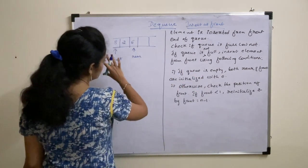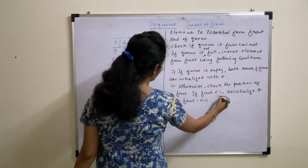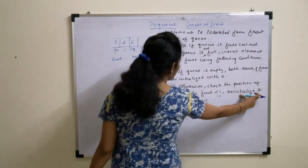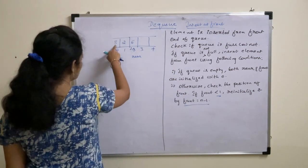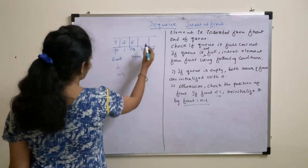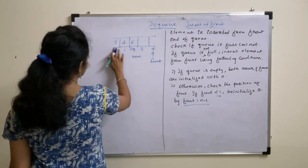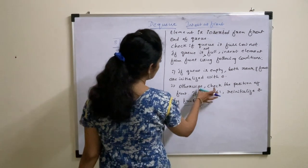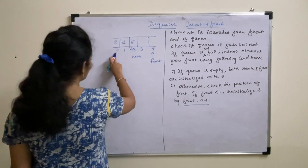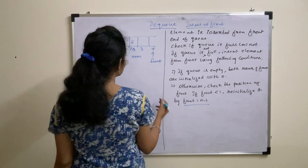If there are elements in the queue, check the position of the front. If front is less than 1, that is front equals 0, then re-initialize front to n minus 1, where n is the size of the array. So if size is 5, then 5 minus 1 is 4, and you re-initialize front to index 4. That means your front is now pointing to the last location, and you can insert the new value there — for example, value 7.